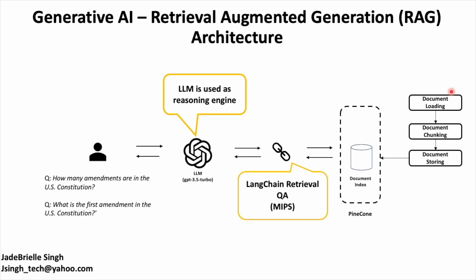You will load the document using Langchain's document loader — in my case, the U.S. Constitution — into a document format. Then you will break that document down into smaller segments called chunks, and those chunks will be turned into embeddings, which we will store in a vector database called Pinecone.